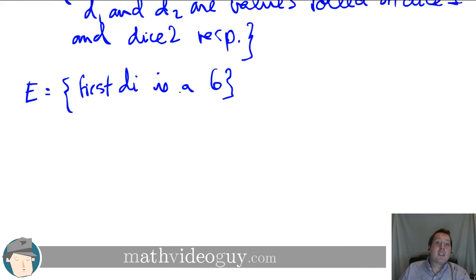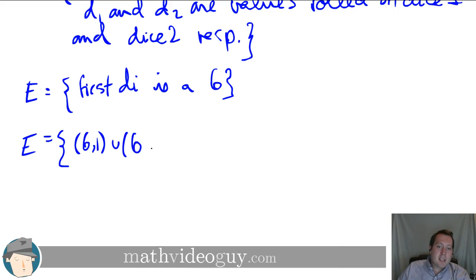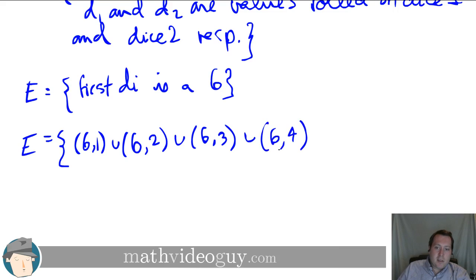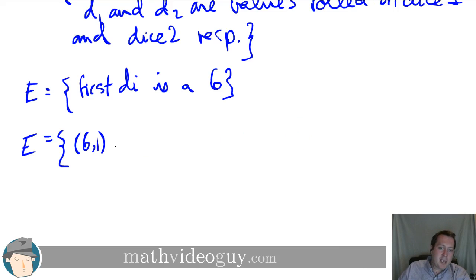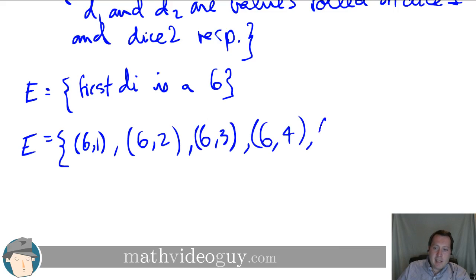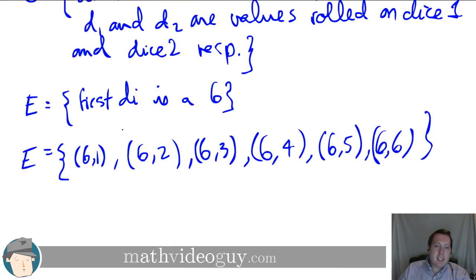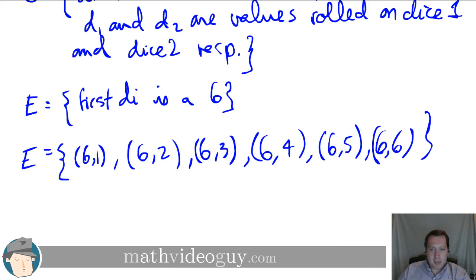Now let's look at an event E where the first die is a six. This event corresponds to a set of outcomes: E = {(6,1), (6,2), (6,3), (6,4), (6,5), (6,6)}. We can define an event as a set of more specific outcomes — in this case, all outcomes where the first die is 6.